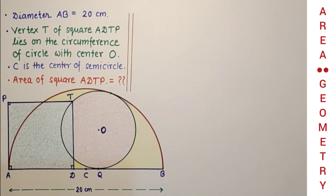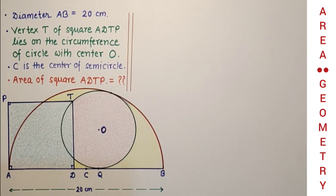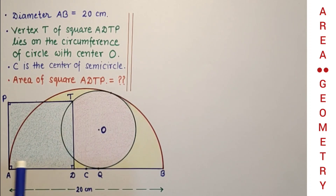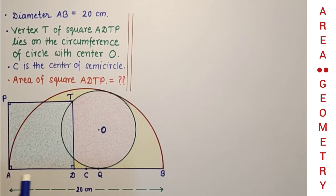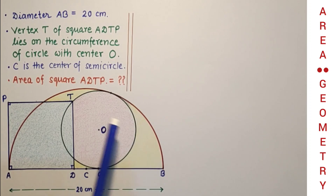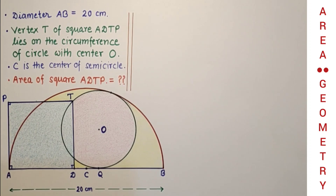Hello viewers, welcome to this channel. Today we will discuss this very interesting problem. We are given a semicircle whose diameter AB is 20 centimeters. ADTP is a square and vertex T lies on the circle whose center is O, and this circle touches the semicircle at a point and on the diameter at point Q. C is the center of this semicircle. We have to find the area of square ADTP.